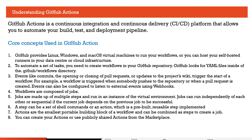Let's understand the core concepts used in GitHub Actions. The first concept is a workflow — basically, a set of tasks you need to perform to achieve the desired result. A workflow is a parent entity. Inside the workflow, we have jobs. Workflow is made of multiple jobs, and jobs are made of multiple steps. Each job runs on an instance of a virtual environment.